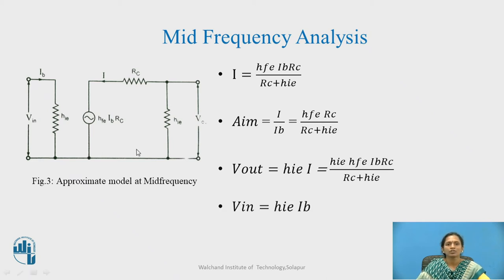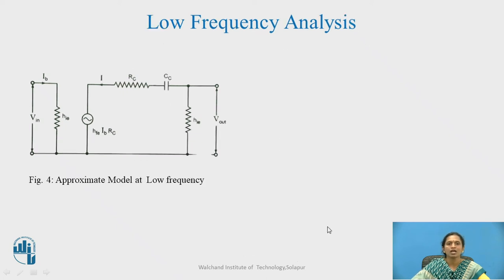Next, VIN equal to input impedance into input current that is HI into IB. Why I am calculating this? Because I am interested in the voltage gain which is AVM. AVM is voltage gain at the mid frequency. This is my AVM.